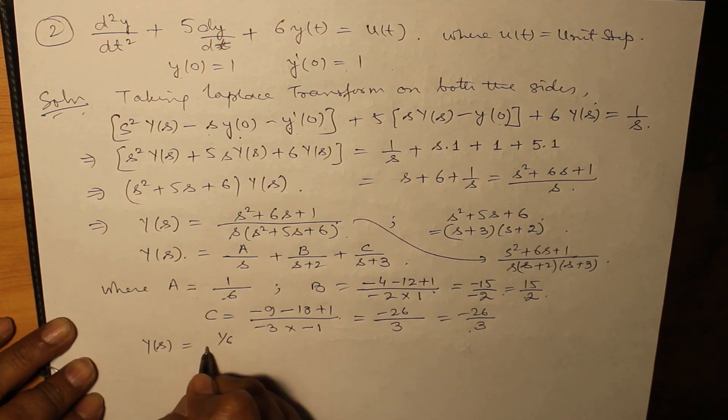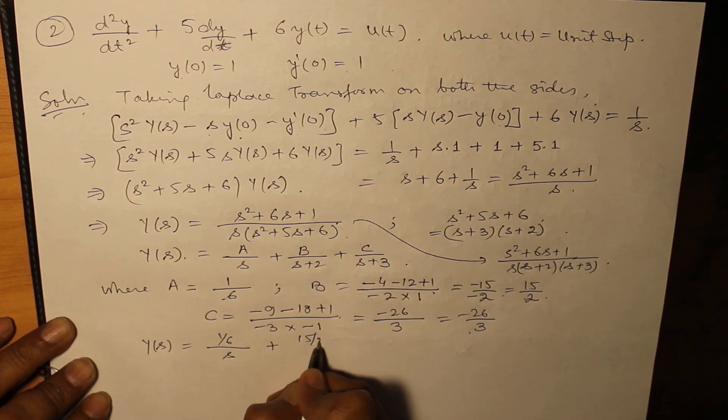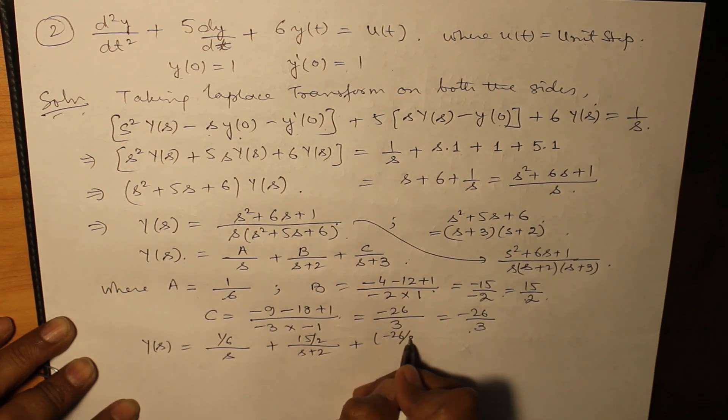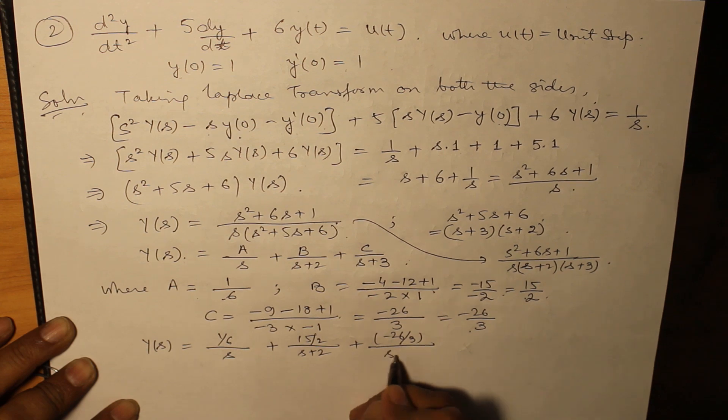Put the values of A, B and C in this equation Y(s) expression: 1/6 over s + 15/2 over (s + 2) and -26/3 over (s + 3).